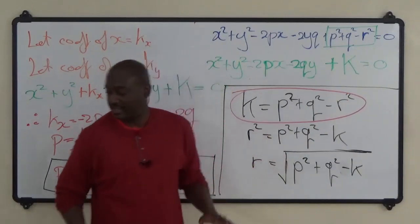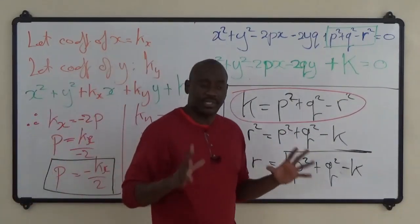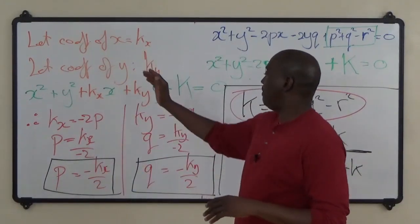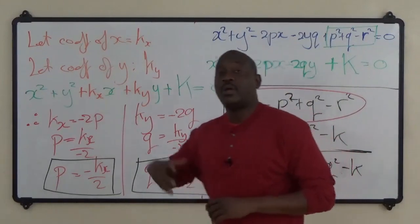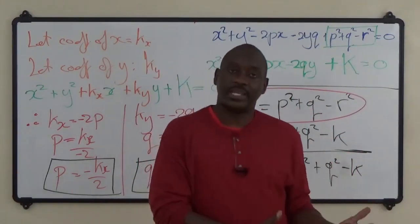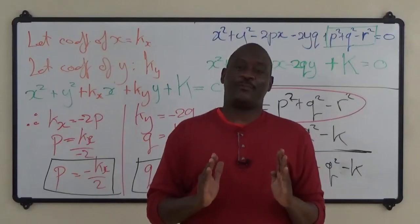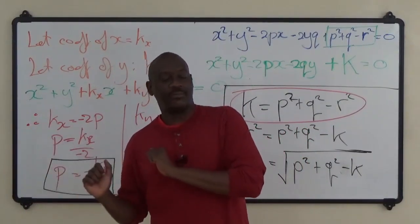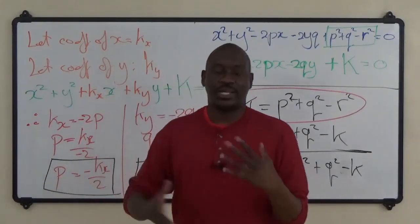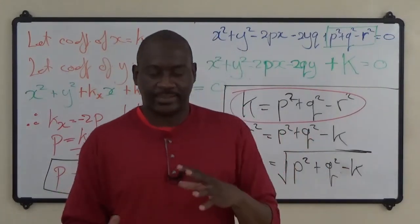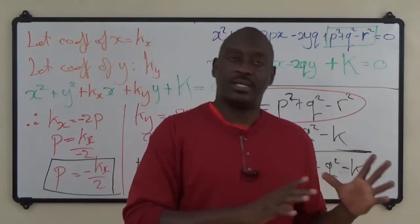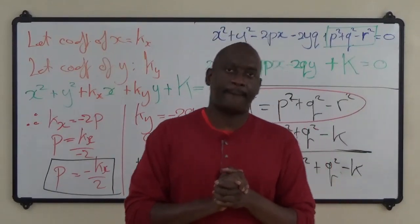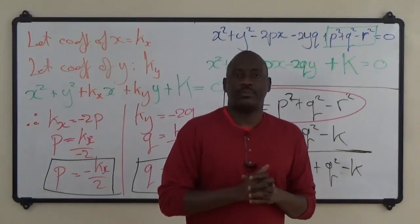So I will stop here for this video. Basically, what we have done is demonstrated the movement from standard form to general form. In the next video we're going to go in the opposite direction — starting with the general form and converting to standard form. After that, we'll work on an example expressing the same circle using both versions of the equation. Hope you're enjoying it — stick around, we have plenty more coming your way.